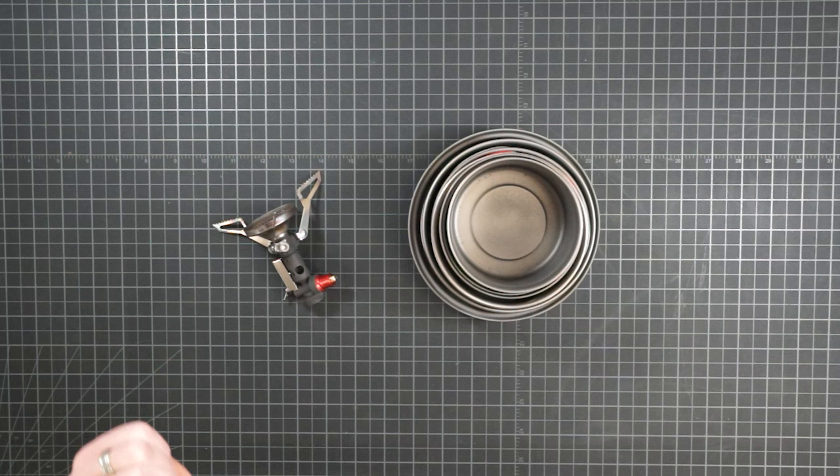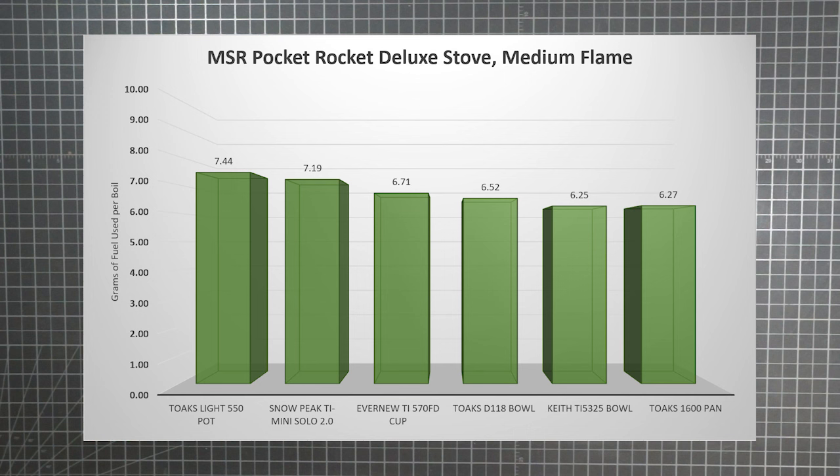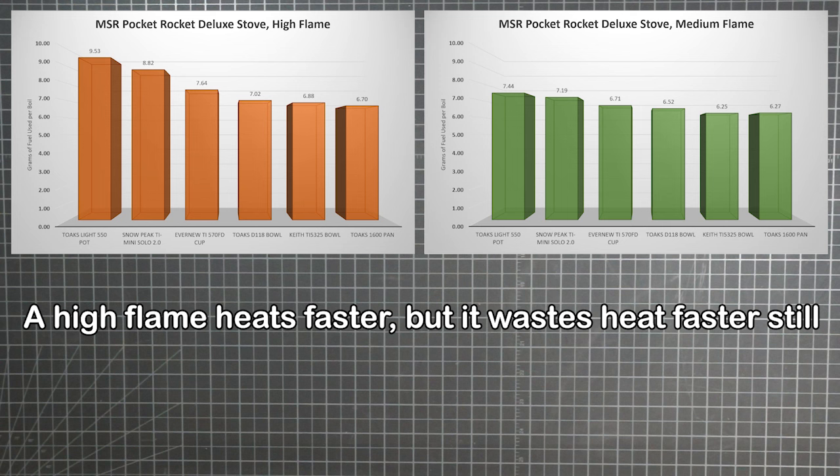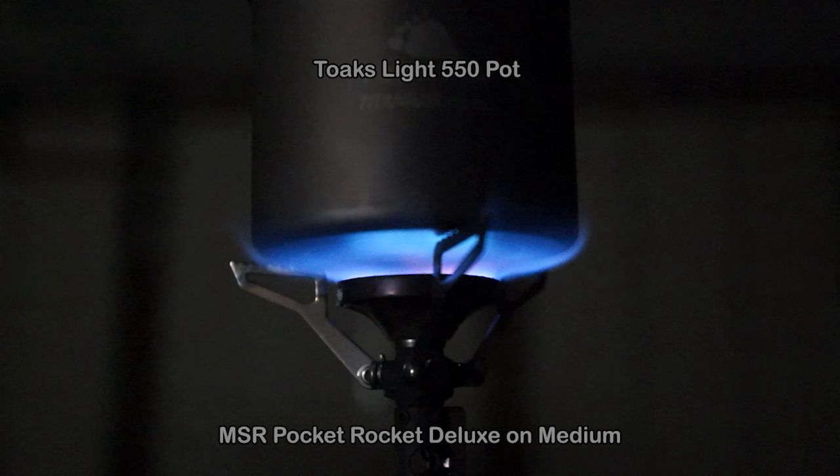Next, I ran the same stove through the same six pots, but this time all on a medium flame. The big takeaway for me is how all the numbers across the board are lower for the medium flame than the high. So turning your flame down is significantly more efficient no matter which size container you use. A high flame may heat your water faster, but it wastes heat into the environment even faster still. You should expect an efficiency penalty for being in a hurry. Now on medium, the narrowest pot is still more efficient than even the third pot when your flame is on high. And here's the flame pattern series at medium.